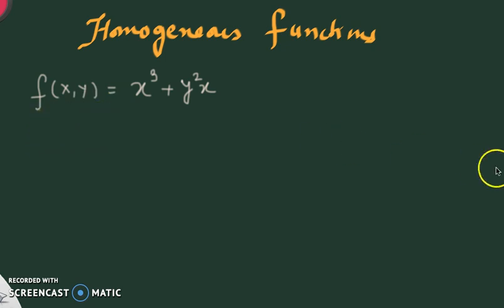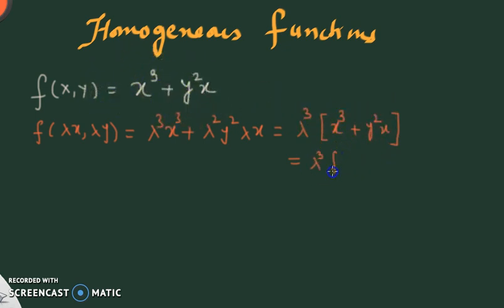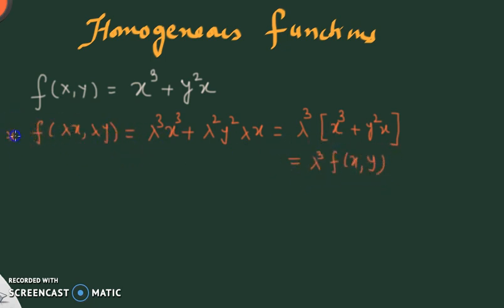Let's see what we can do with this function. If I replace every x by λx and every y by λy, I get λ³x³ + λ²·(λx)·y², which gives λ³ common, and inside the bracket I have x³ + y²x — exactly my original function. So I can write it as λ³·f(x,y). By replacing x→λx and y→λy, I get λ³·f(x,y); here the degree is 3.